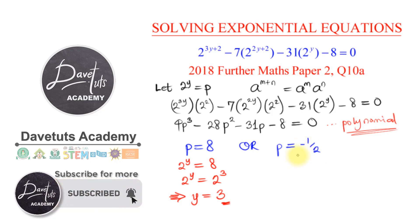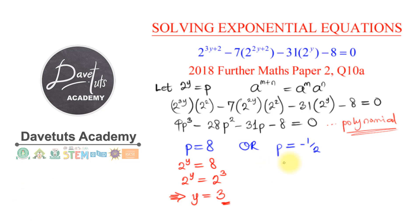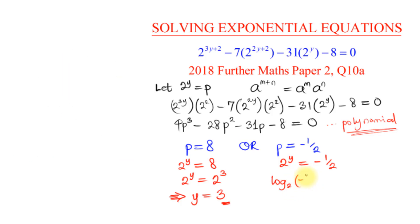If we try to solve 2^y equals minus 1 over 2, the best approach is a logarithmic transformation. That gives us: log base 2 of (minus 1 over 2) equals y. To verify, I go back to calculator compute mode and evaluate log base 2 of negative 1/2.